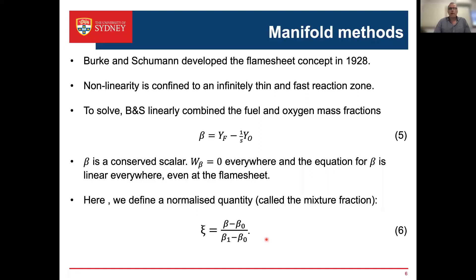The first broad approach is manifold methods. The original concept was introduced by Burke and Schumann in 1928, where the non-linearity is confined to an infinitely thin and fast reaction zone. To solve this, they linearly combined mass fractions of fuel and oxygen to introduce a new scalar β. Where s is the mass ratio of oxidizer to fuel, β is a conserved scalar — its source term is zero everywhere — so the equation for β is linear even at the flame sheet.